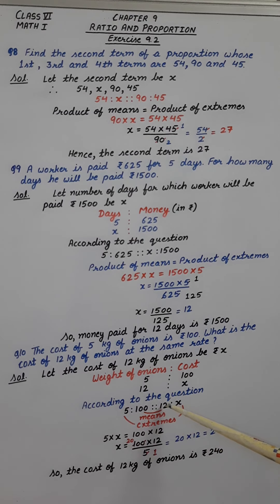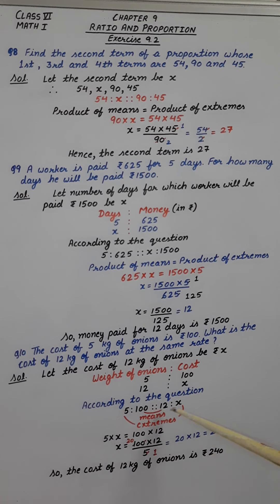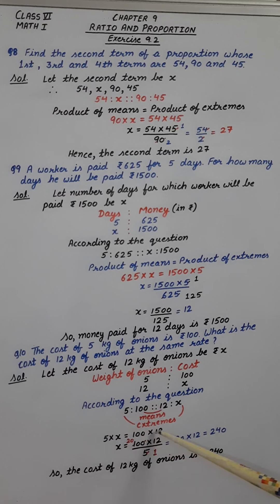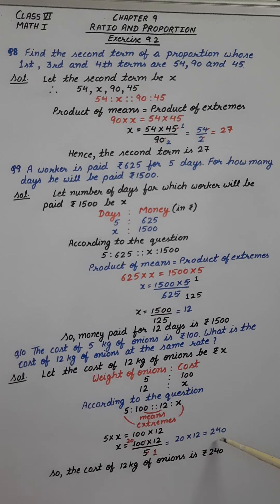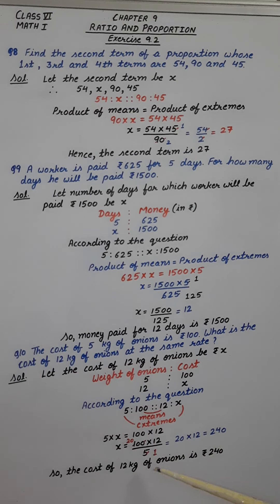Using the formula, product of means is equal to product of extremes: 5 multiplied by X is equal to 100 multiplied by 12. Finding the value of X by transposing and reducing, the result is 20 multiplied by 12, which is 240. So the cost of 12 kg of onions is Rs. 240. Now it's halfway done.